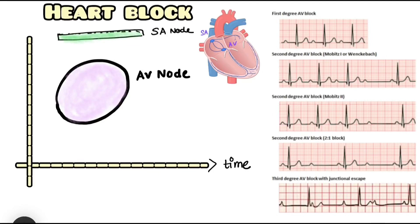In this video, let us learn about heart blocks. Heart block basically means there is some kind of blockage in the electrical conduction pathway of the heart. The most common site of this blockage is the AV node. Heart block is hence also known as the nodal block, to signify the AV node, or junctional block — the junction between atrium and ventricles. Based on its severity, heart block can be of three types: first degree, second degree, and third degree heart block.